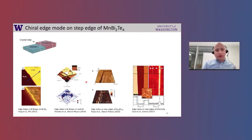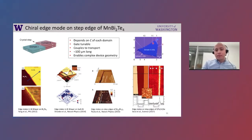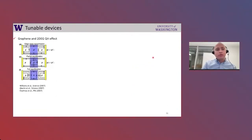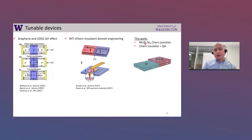There is a lot of literature on chiral edge modes at step edges of topological materials, but our situation is slightly different: we can couple it to transport, our edges are very long — in this case 100 microns for mechanically exfoliated devices — and it enables complex device geometry with domains in the order of hundreds of microns. In comparison to other systems: in quantum Hall you can create p-n junctions with chiral edge modes at interfaces; in magnetic topological insulators you can write domains with magnetic force microscopy to create similar edge modes. In our work we see a unique situation where Chern insulator and quantum Hall states interplay, and we use nature to form junctions by choosing different thicknesses.